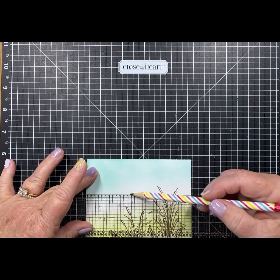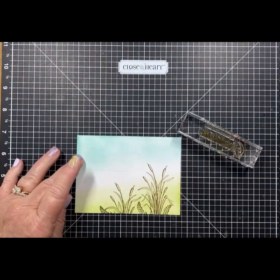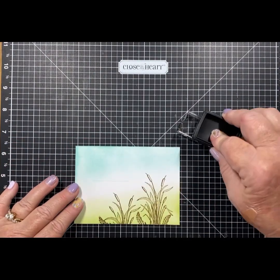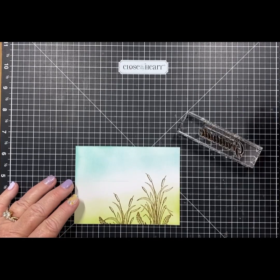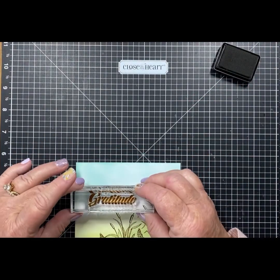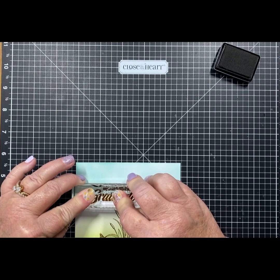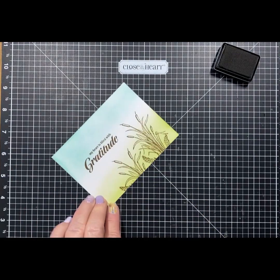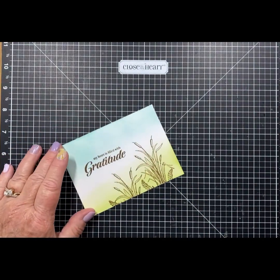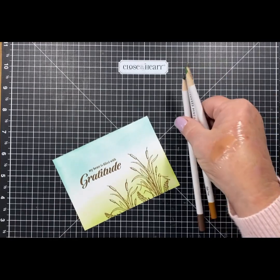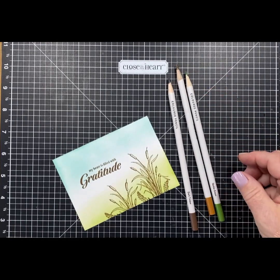Now, what I'm doing here is just an extra little step, and that's putting a line for my sentiment. If I had my MISTI out, I could line it up with my MISTI. But just drawing a little pencil line that you can erase with your pink rubber eraser helps you keep that sentiment a little bit straighter.